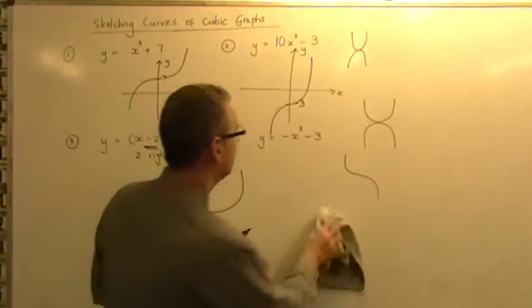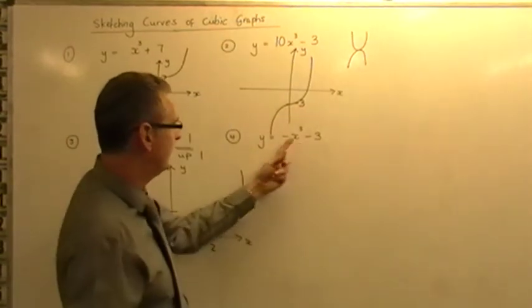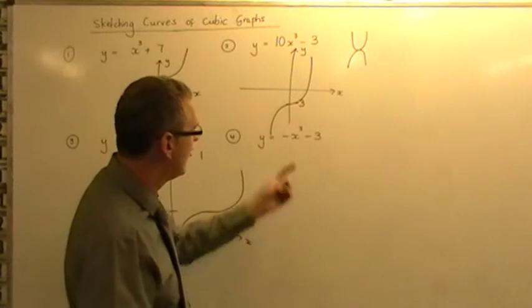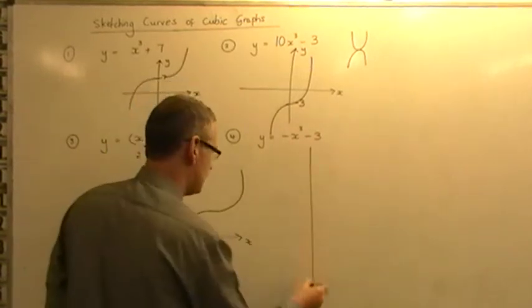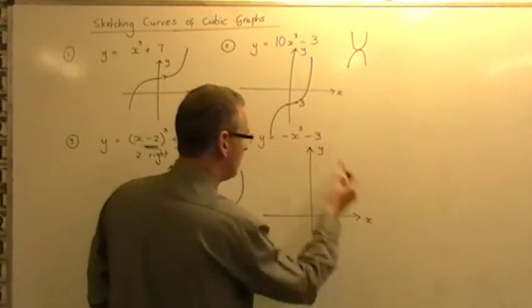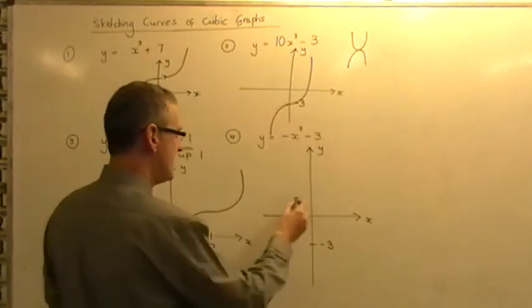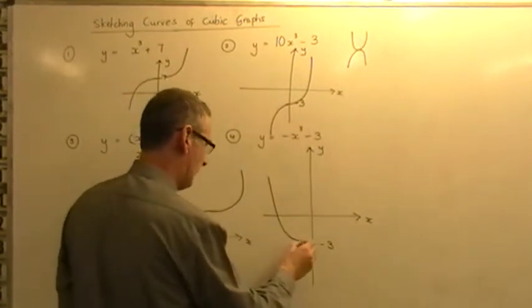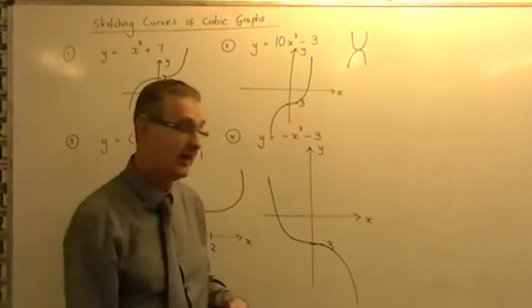So sketching this, what we're going to get is the negative x cubed graph. It's only minus one, so it's the same steepness as normal, and then it's moved three places down because of the minus 3. So the sketch will look something like this. Y and x, minus three on the end, move it three places down, and you get a negative x cubed graph in that position of normal steepness. And it's as simple as that.